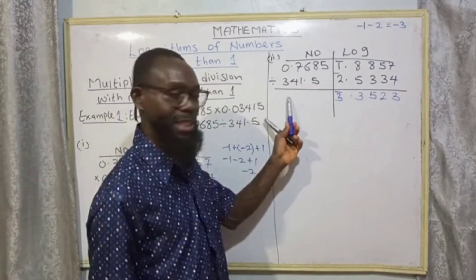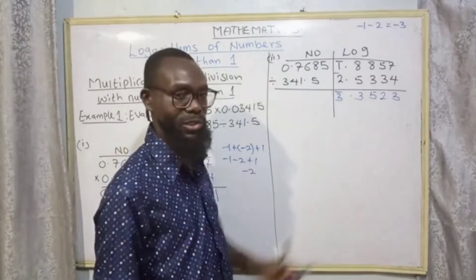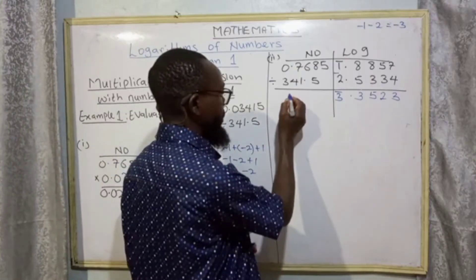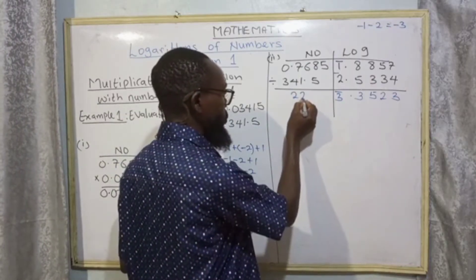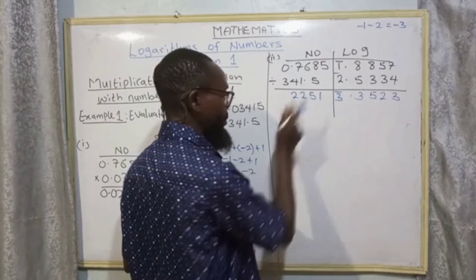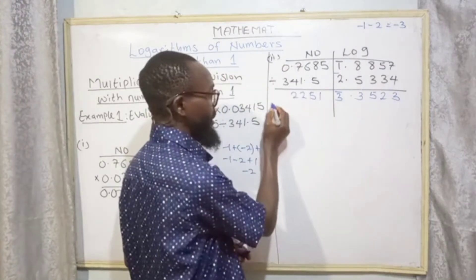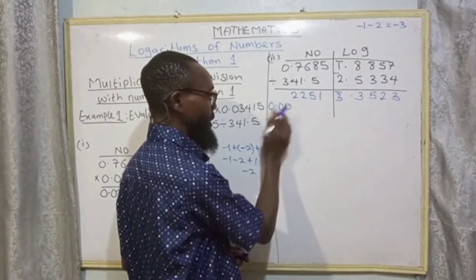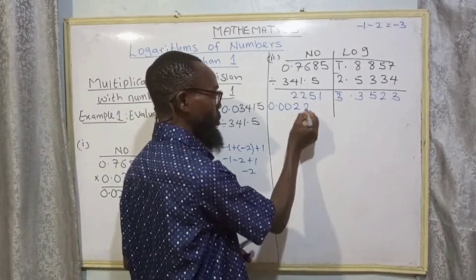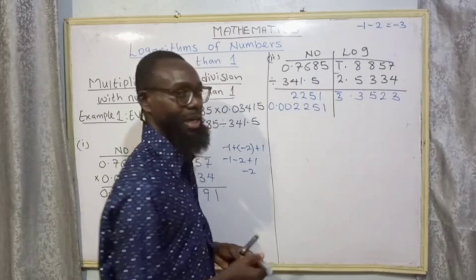Now to find our final answer we check the anti-log table: 35 under 2 difference 3, we have 2251. Bar three means three zeros, so our final answer is 0.0002251.